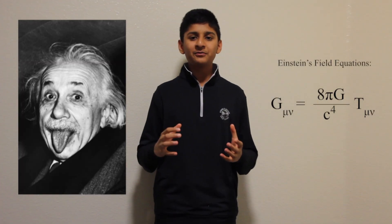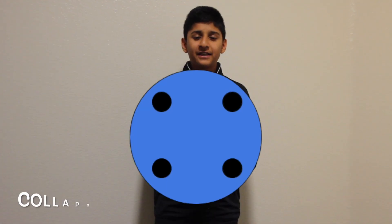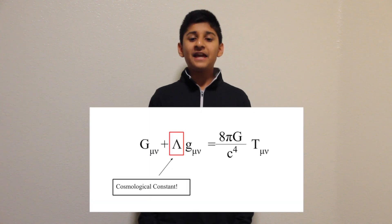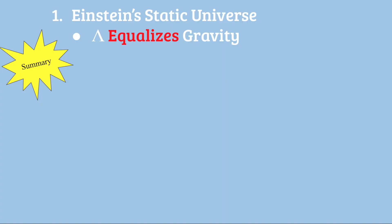Einstein's equations told him the universe would either be collapsing under the force of gravity, or expanding forever. However, Einstein felt the universe was static, so he added a cosmological constant to his equations. In theory, this is a vacuum energy that opposes the force of gravity and enables the static universe. Einstein believed the cosmological constant neutralized gravity.